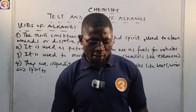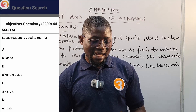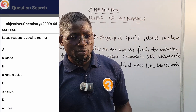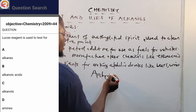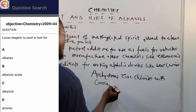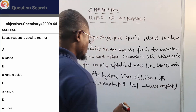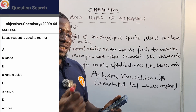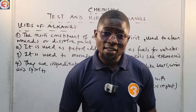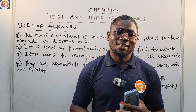Back to the 2009 question 44: 'Lucas reagent is used to test for?' The correct answer is C — alkanols (alcohols). Lucas reagent is anhydrous zinc chloride with concentrated hydrochloric acid, used to identify and differentiate between primary, secondary, and tertiary alkanols. My name is Master T — keep working, keep studying. See you in the next class where we'll talk about carboxylic acids. Thank you for watching.